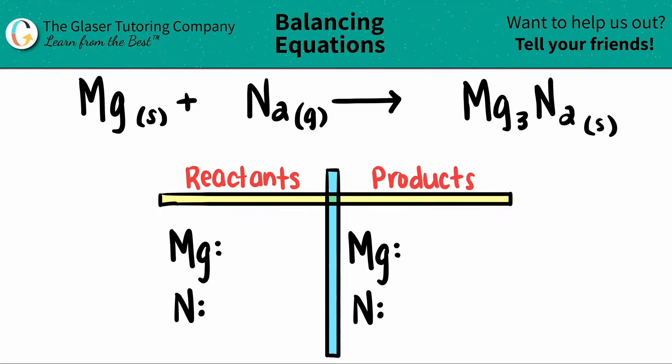Today, we're going to be balancing the equation of magnesium solid plus nitrogen gas, N2, and that will produce magnesium nitride, Mg3N2.